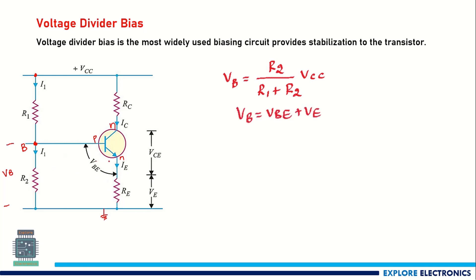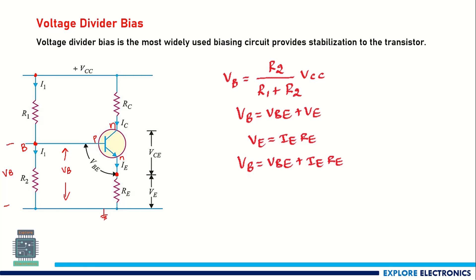If we write VB in terms of VBE and VE: from base to emitter we have VBE, and from emitter to ground we have VE. So the total VB equals VBE plus VE across RE. VE can be written as IE into RE, where IE is the current flowing out of the emitter through resistor RE. Therefore, VB equals VBE plus IE times RE. Rearranging, the emitter current IE equals (VB minus VBE) divided by RE.